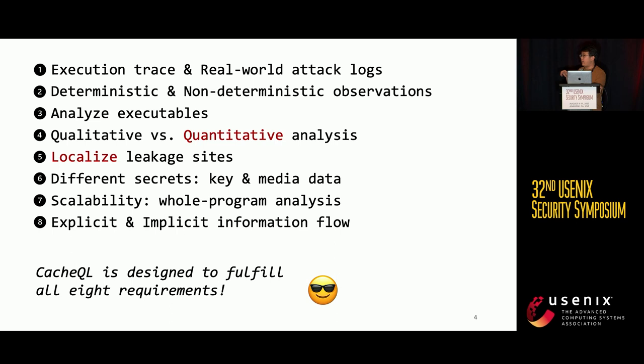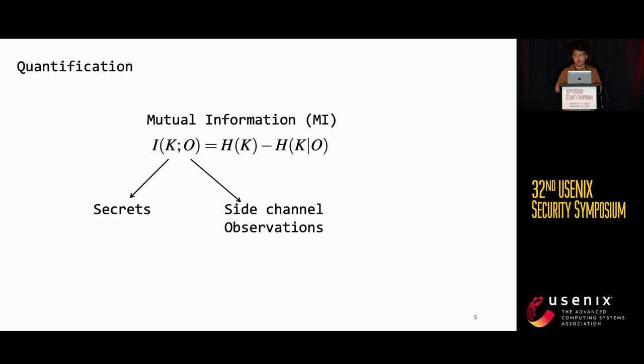The Q in CacheQL refers to quantitative analysis, and the L indicates localizing vulnerable program points. Due to the limited time, I will mainly introduce how we achieve quantitative analysis and localizing leakage sites. For other points, you can find more details in our paper.